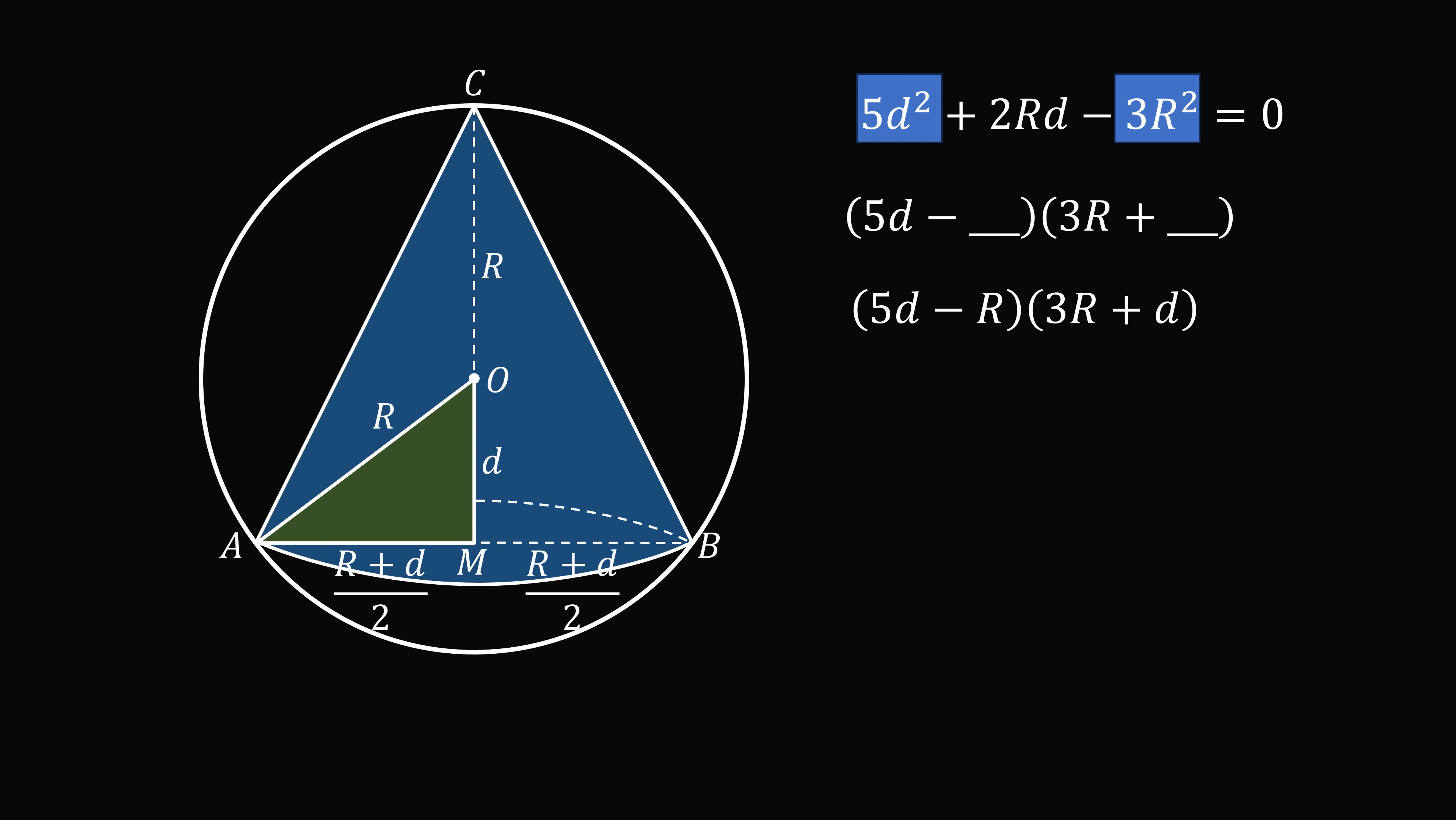But if we expand this out, this will be 5d squared plus 14dR minus 3R squared, and this is not what the original quadratic was. So this is not what it factors into. So instead, we could try 5d minus something multiplied by R plus something.